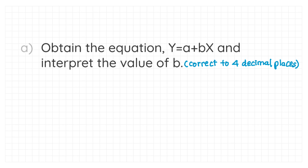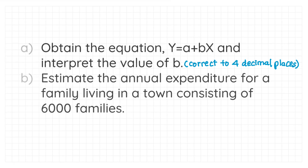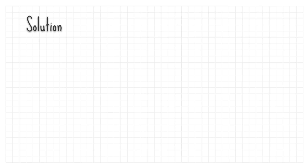The second question: estimate the annual expenditure for a family living in a town consisting of six thousand families. For eight towns, the number of observations n for x and y is equal to eight.